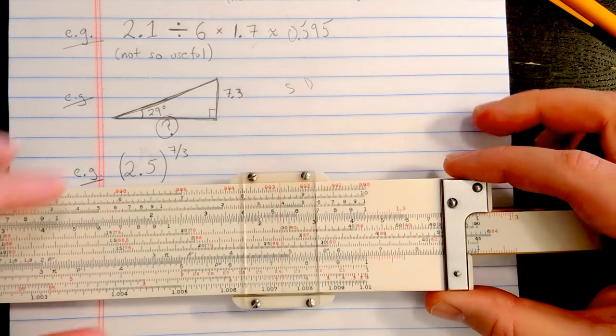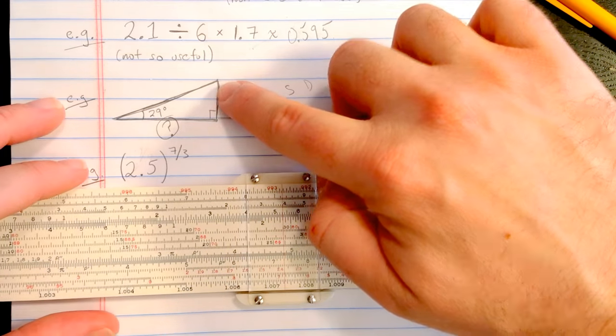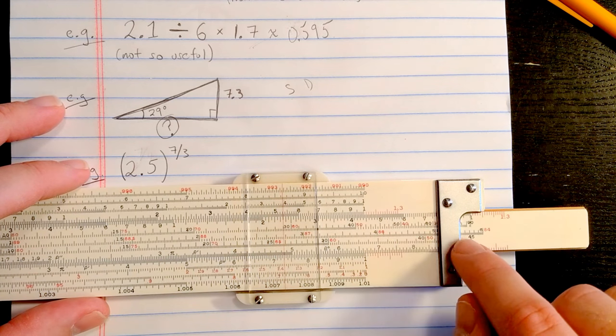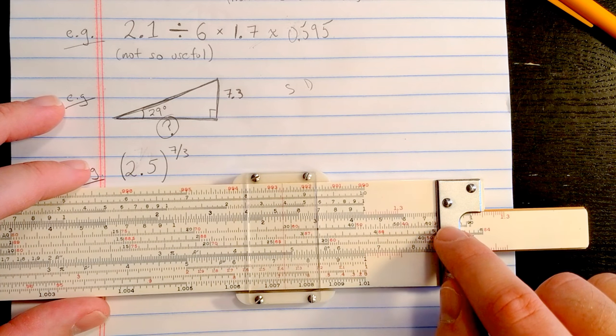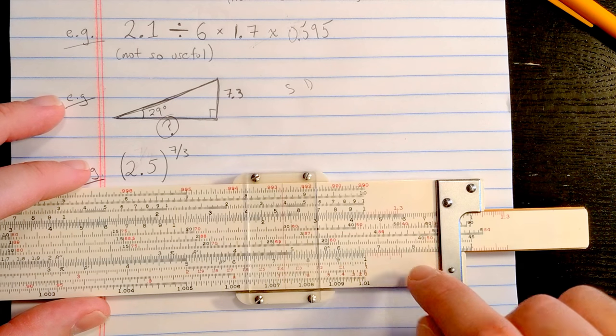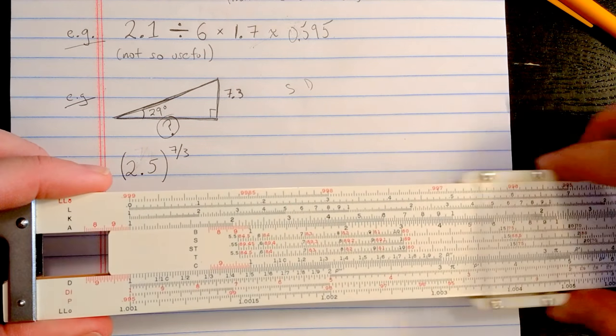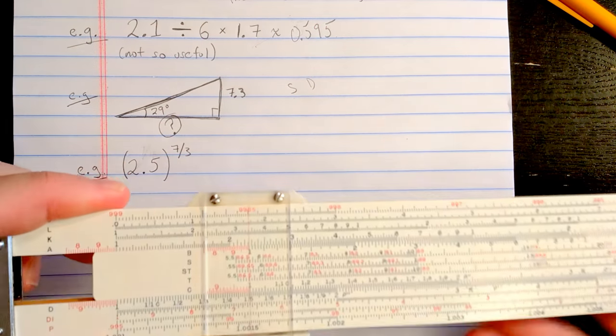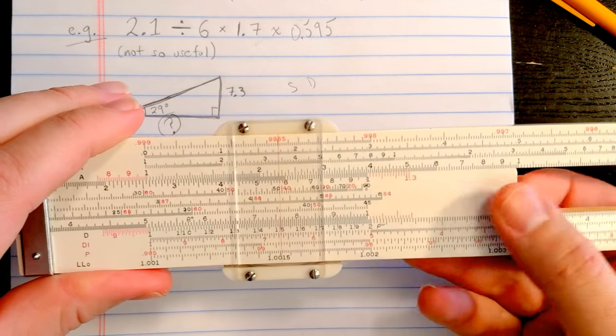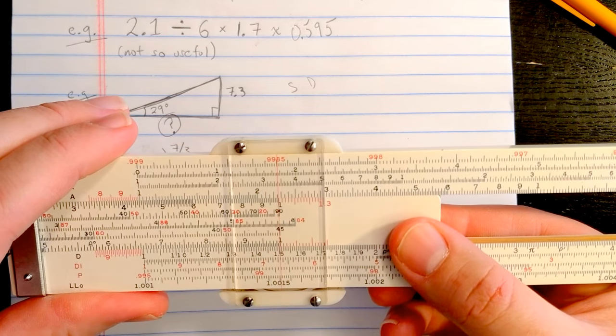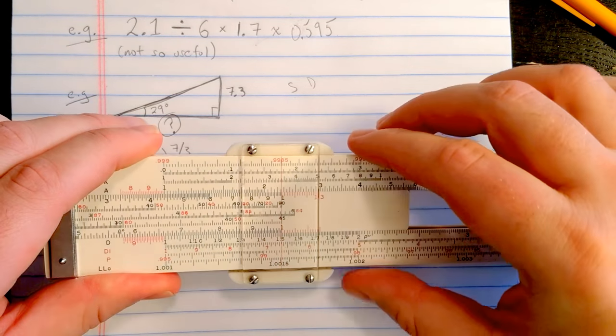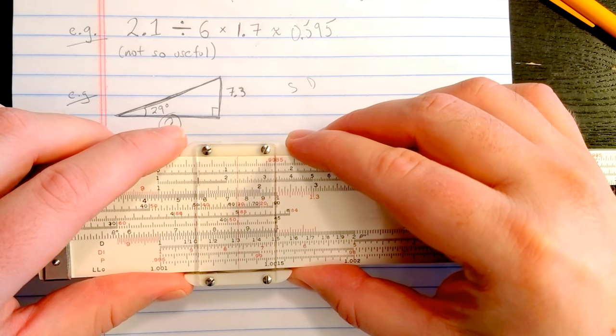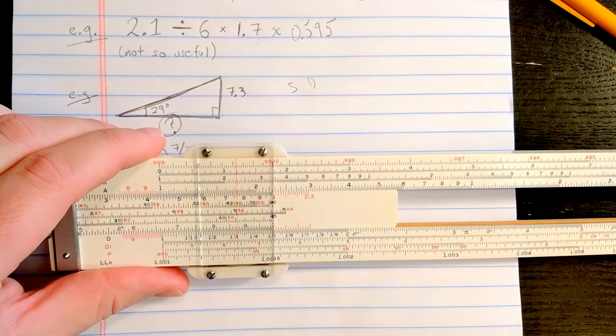Now, what we need to do is we need to bring the complement of the angle, or the 61 degrees, under the hairline on S. But you see that's here under the brace and that will be off scale. So what you would normally do is come and do an index swap. Take that one, swap it with the other one. Then you could find the 61 right about here. Read the result on D.